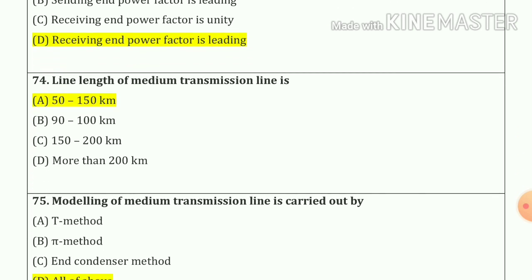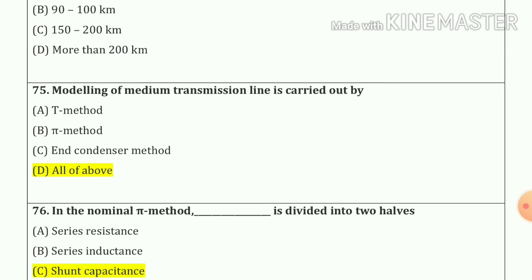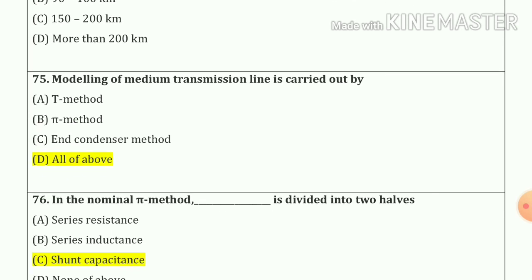Question number 74: line length of medium transmission line is 50 to 150 kilometers — option number A. Question number 75: modeling of medium transmission line is carried out by all of the above — that means T method, pi method, and nominal method — answer is all of the above.